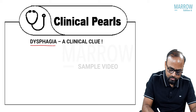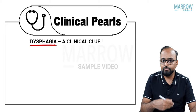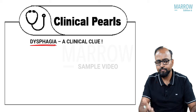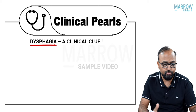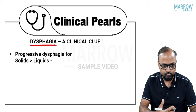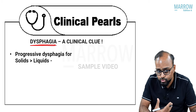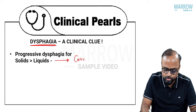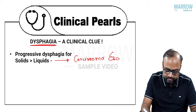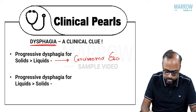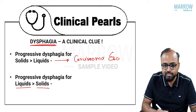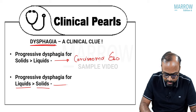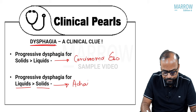Now regarding dysphagia — this could be part of the history the examiner gives you. If the examiner gives a history of progressive dysphagia which is more for solids than liquids, it usually points towards carcinoma esophagus. But if dysphagia is more for liquids than solids, it points more towards a diagnosis of achalasia cardia.